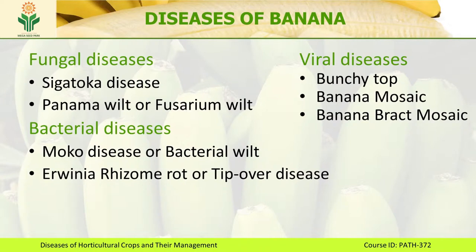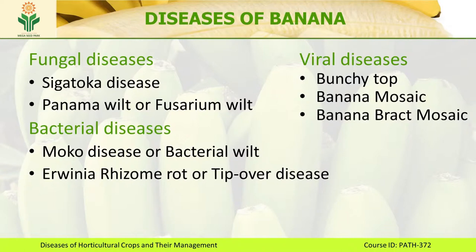Among the biotic stresses, the most important ones are diseases caused by fungi, bacteria, and viruses. In this lecture we will be discussing about different fungal diseases like Sigatoka disease, Panama disease (also known as Fusarium wilt), bacterial diseases such as Moko or Bacterial wilt, and Erwinia rhizome rot or Tip-over disease. The most important diseases in banana are also caused by viruses, including bunchy top of banana, banana mosaic, and banana bract mosaic.